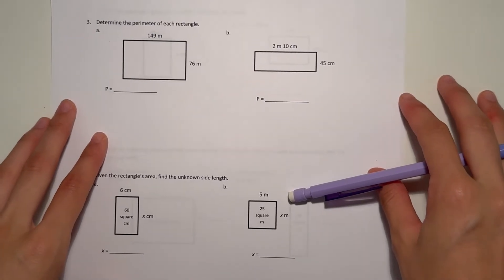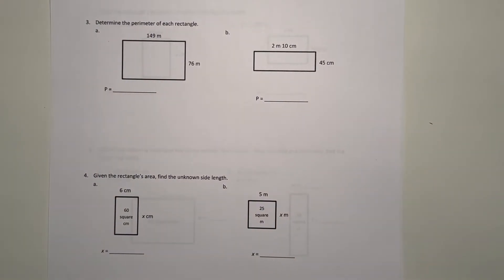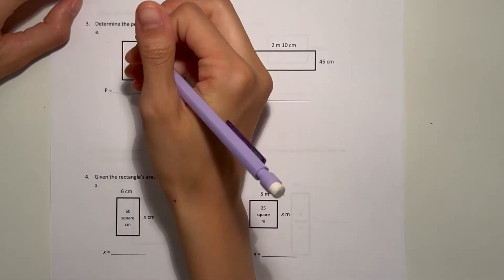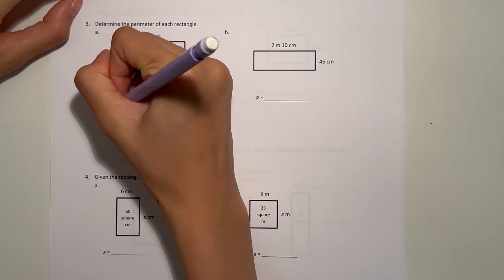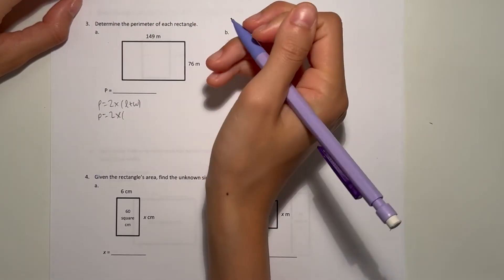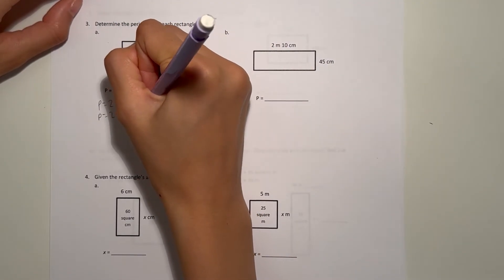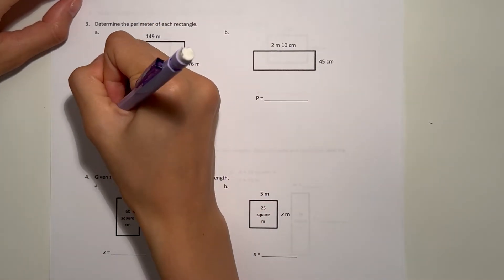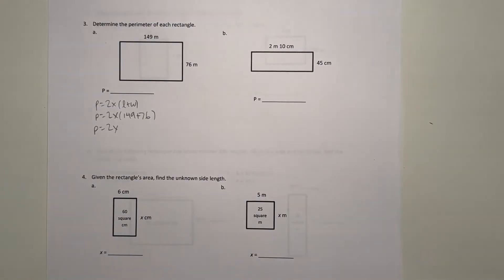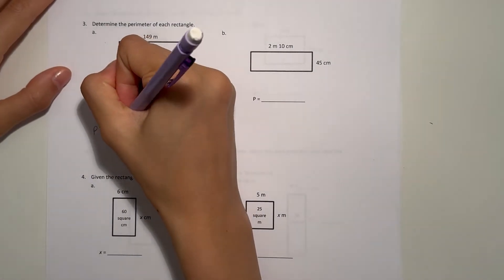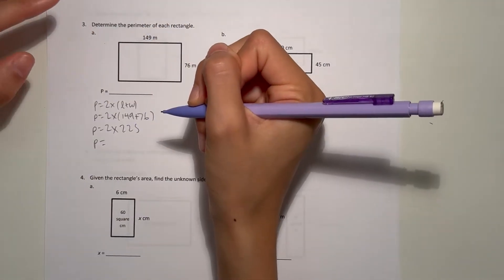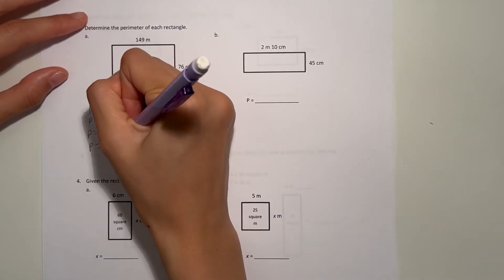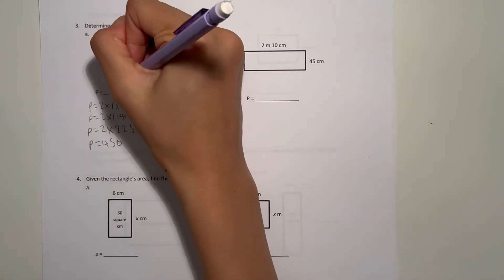Number 3: determine the perimeter of each rectangle. Starting with A — perimeter equals 2 times length plus width, so it's 2 times 149 plus 76 meters. 149 plus 76 is 225. So our perimeter is 225 times 2, that's 450. So our perimeter is 450 meters.